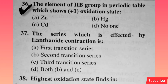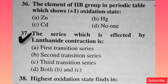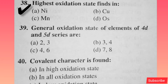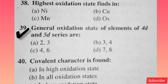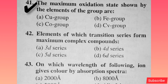The element of second B group in the periodic table which shows plus one oxidation state — option A is right. The series which is affected by lanthanide contraction is — option D is right. Highest oxidation state is found in — option D is correct. General oxidation state of elements of 4D and 5D series — option D is right. Covalent character is found in — option A is right.